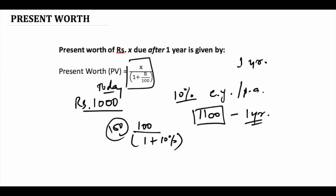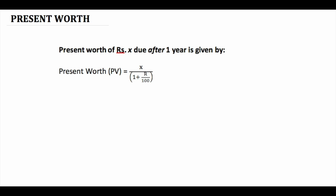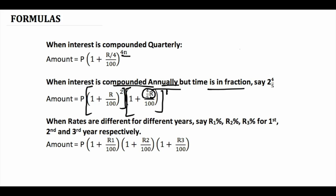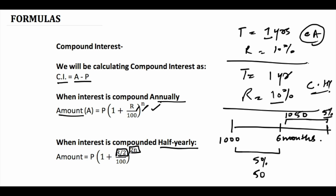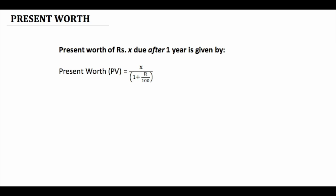The present value of 100 rupees received in the future is found using this formula, and that value is added to 1000 to find the present value of the entire sum today. This formula is derived from the compound interest formula: amount in future equals present value into (1 + r/100) raised to power n. So if you want to find present value, you divide the future amount by (1 + r/100) raised to power n.